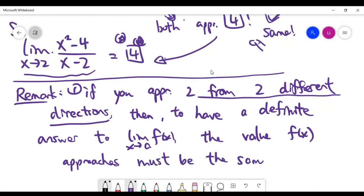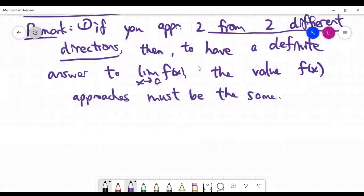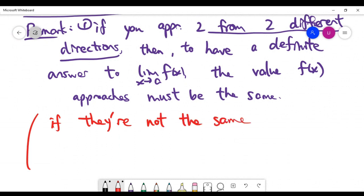If they are not the same, then we say the limit is undefined. So if they are not the same, then the limit when x goes to 2 for the function f is undefined.